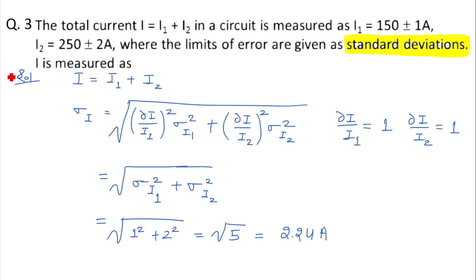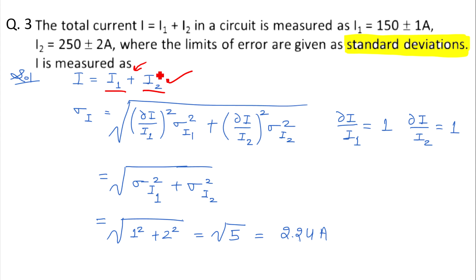Here you have to consider that the total current i = i1 + i2, so current i is a function that depends on the variables i1 and i2. This is a function of two variables which depends on i1 and i2.